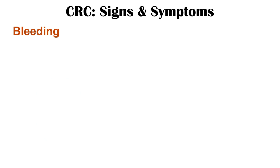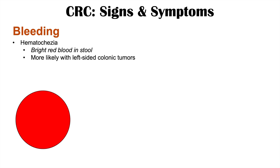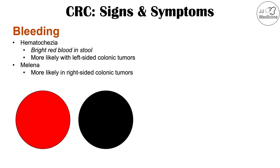Some very important signs of colon cancer include bleeding. Hematochezia — bright red blood in the stool — is more likely to occur with a left-sided colonic tumor, as the tumor disrupts mucosal surfaces. Melena — a black, tarry, and smelly stool — is more likely to occur with right-sided colonic tumors, because colonic bacteria have more time to digest the blood from a slow bleed on the right side of the colon.